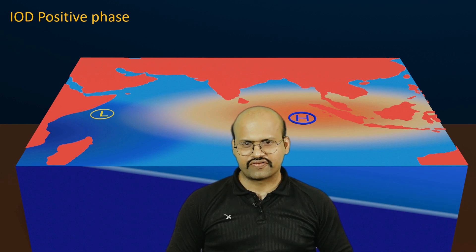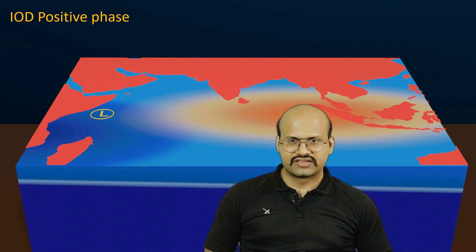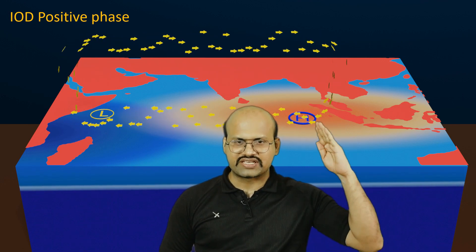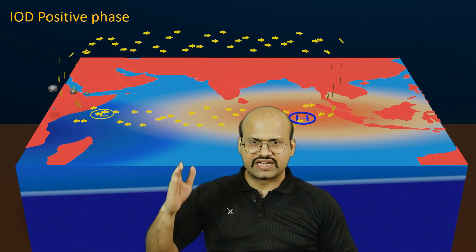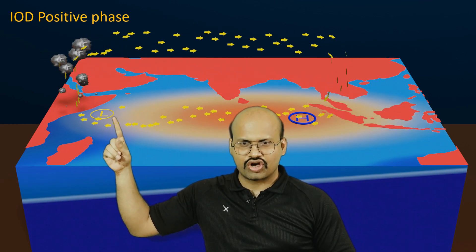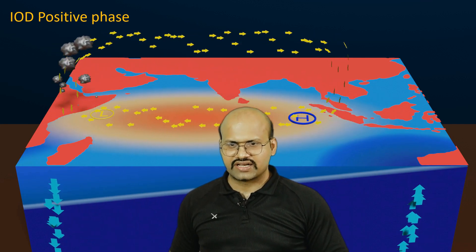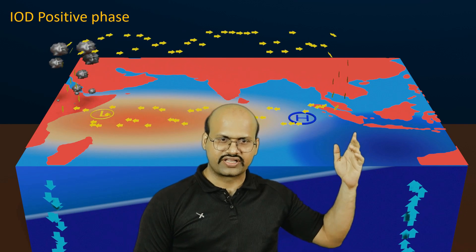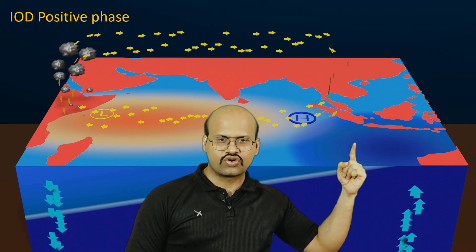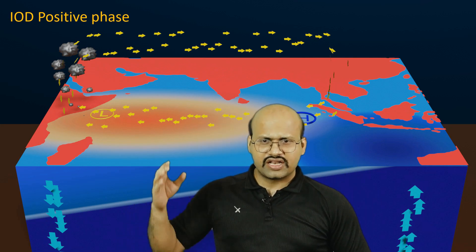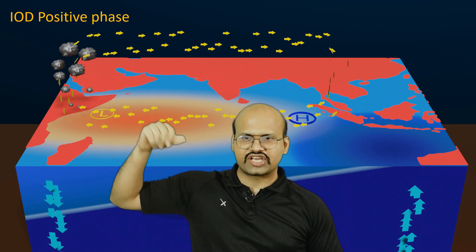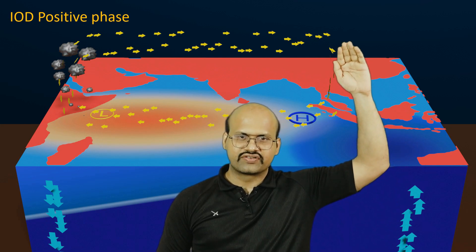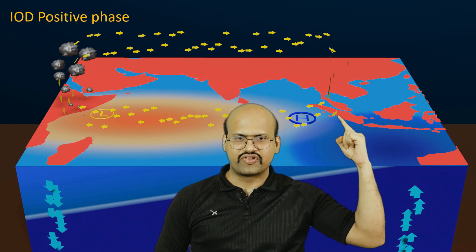Now let's see what happens in the positive phase of Indian Ocean Dipole. The winds change their direction — there is a low pressure region on the Arabian Sea side and a high pressure region on the Bay of Bengal side. A very strong wind current moves from this high pressure towards the low pressure. The hot water now gets concentrated near the African continent. Because of this accumulation, water moves downward and the thermocline deepens there. On the eastern side, water is removed, so cold water from deeper ocean parts rises up, bringing the thermocline very close to the surface.